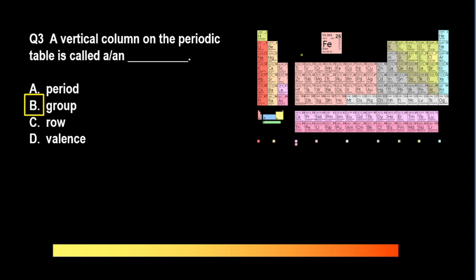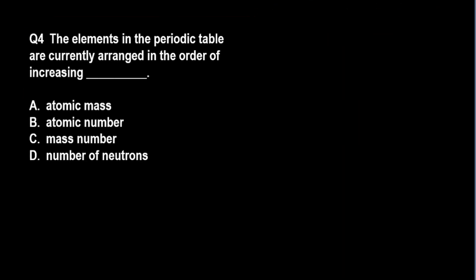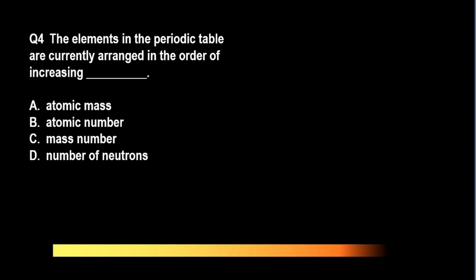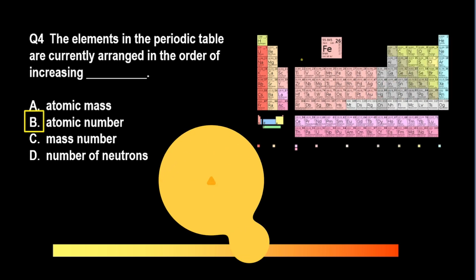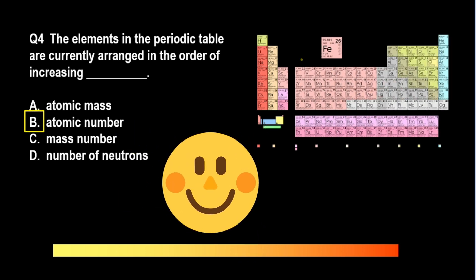Question number 4. The elements in the periodic table are currently arranged in the order of increasing: A. Atomic mass, B. Atomic number, C. Mass number, D. Number of neutrons. The correct answer is letter B. Atomic number refers to the number of protons.